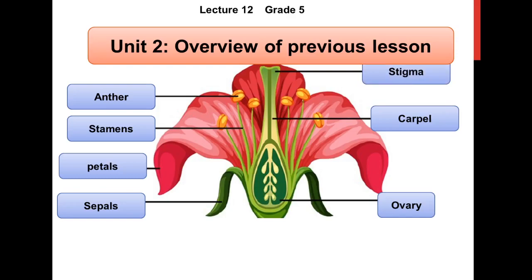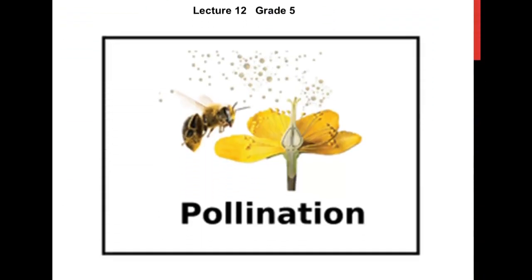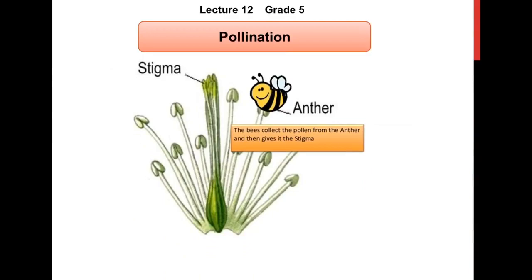Today we study about the pollination in which two parts of the flower are very important. The first is anther and the second one is stigma. Remember, anther is a male part — it is a yellow powder and it is the tip of the stamen. This is stamen, this is anther, and this is stigma. Pollination is a process in which the pollen moves from the anther to the stigma, and this process is known as pollination.